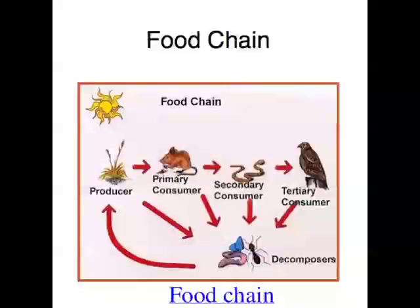The sequence of who eats who in an ecosystem can be illustrated by something called a food chain. A food chain is basically a series of links between different organisms in an ecosystem based on feeding relationships — so who eats who. Each link is illustrated with an arrow, and the direction of the arrow indicates who eats who. For example, if an arrow goes from a grasshopper to a snake, it means that the snake eats the grasshopper.